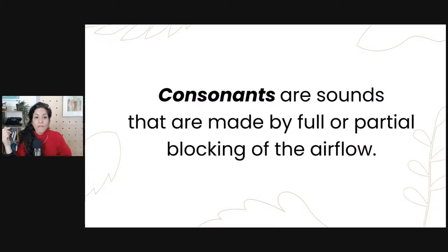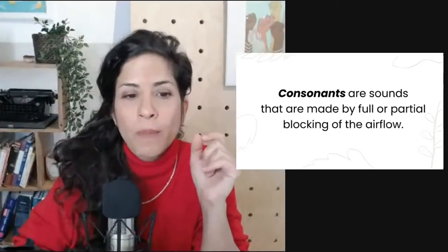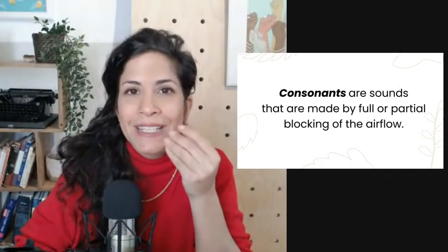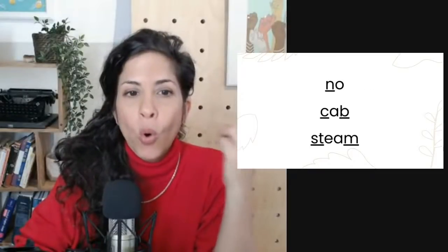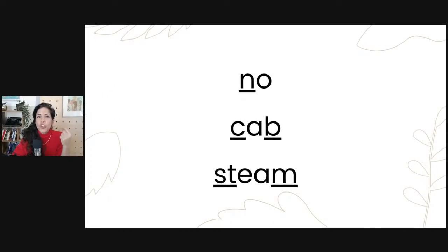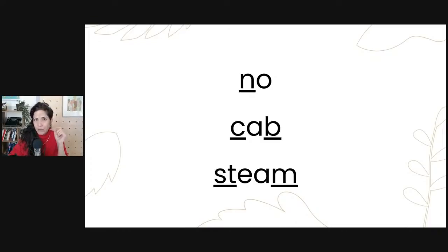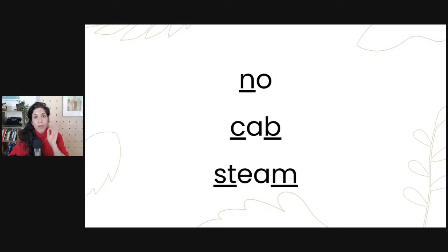Consonants are sounds that are made by full or partial blocking of the airflow. When we talk about consonants, we are talking about something that is stopped, partially stopped, or interrupted. For example, in the word 'no,' the N is a consonant because we block the air with the tongue. The tip of the tongue touches the upper palate, blocks the airflow inside the mouth, and the air comes out through the nose. The air is blocked, finds a different passage — there you have a consonant.